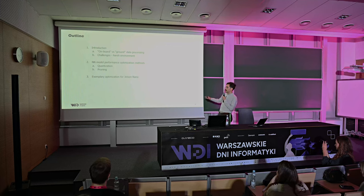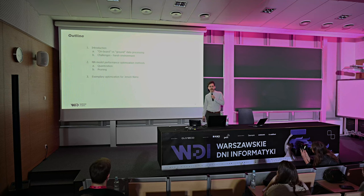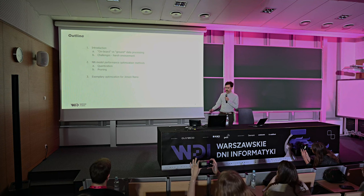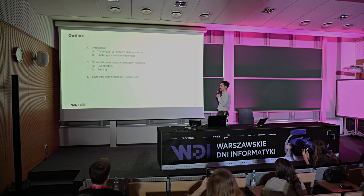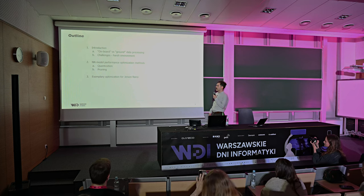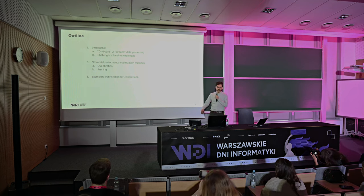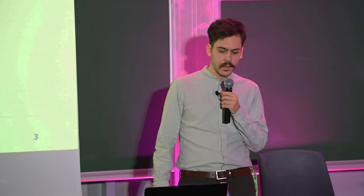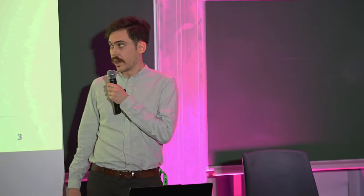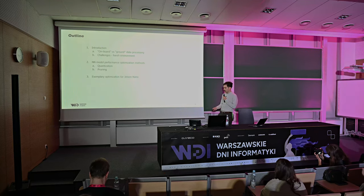Here is the outline. I will first go through a brief introduction about these satellites. I will also present the differences between onboard and ground data processing, and the challenges which satellites face in space — the harsh environment. In the second part, I will focus on neural network model performance optimization methods, specifically quantization and pruning. Pruning will also be used in the third part, which presents a practical example: optimization for Jetson Nano of a use-case algorithm.